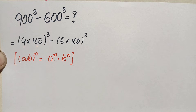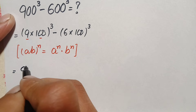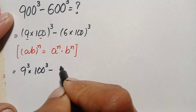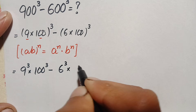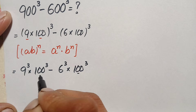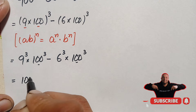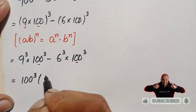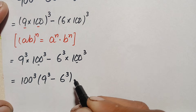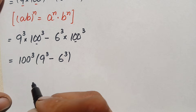Applying the power to both numbers in the base, this becomes 9 raised to power 3 times 100 raised to power 3, minus 6 raised to power 3 times 100 raised to power 3. Since 100 cubed is common in both terms, we factor it out, leaving 100 cubed times the quantity 9 cubed minus 6 cubed. We will now find the values of 6 cubed, 9 cubed, and 100 cubed.